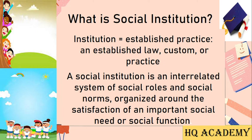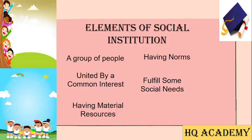Social institutions are organized patterns of belief and behavior centered on basic social needs. Looking at the elements of social institutions: first, there must be a group of people united by a common interest. For example, if we talk about religion, there are many followers who follow one religion and they all have common reasons to follow that particular religion.